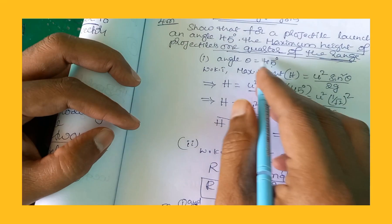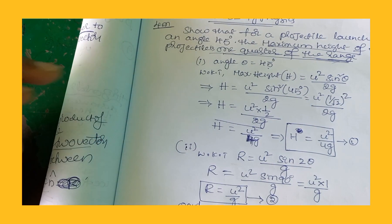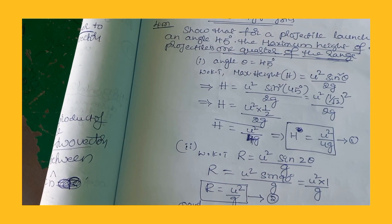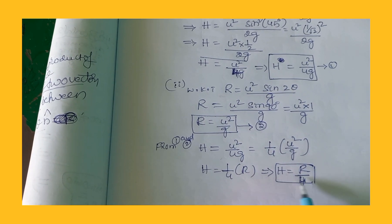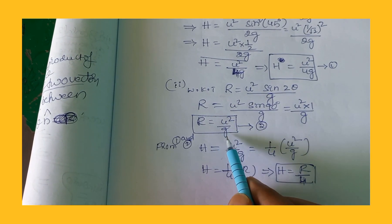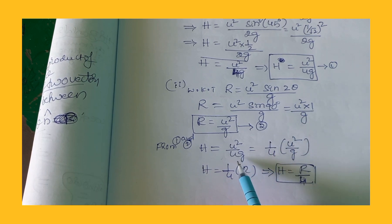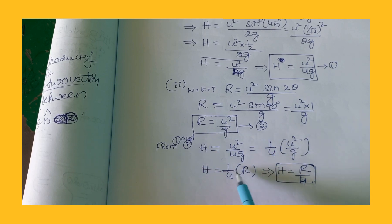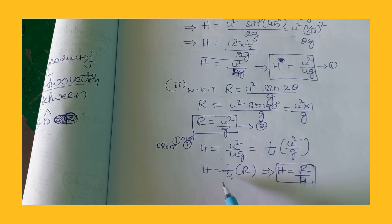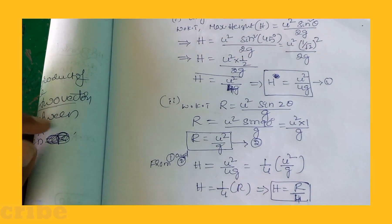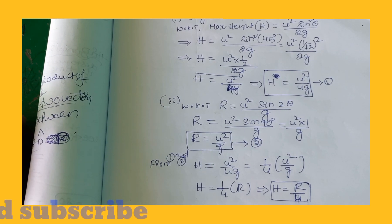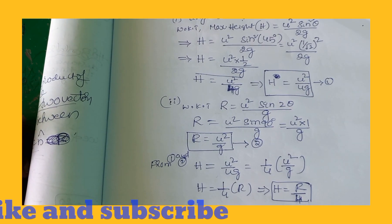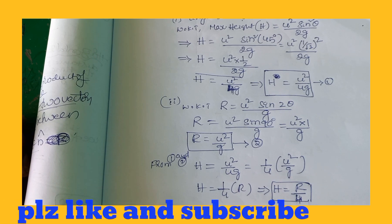Therefore, maximum height H equals u squared by 4g, which is written as 1 by 4 into R. So maximum height equals one quarter of the range. This concludes the derivation. For many more important questions, follow this channel. That is all for today's class.